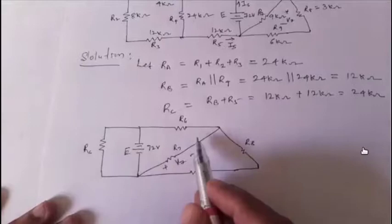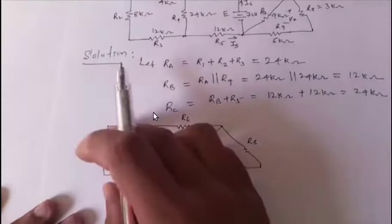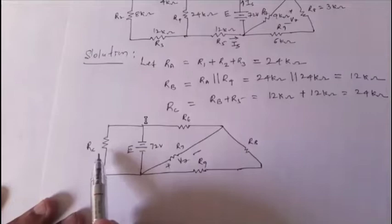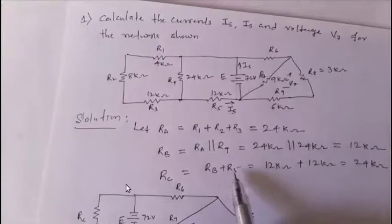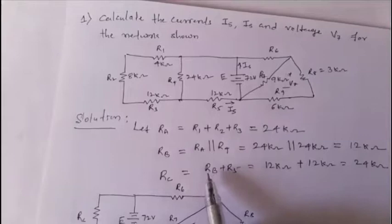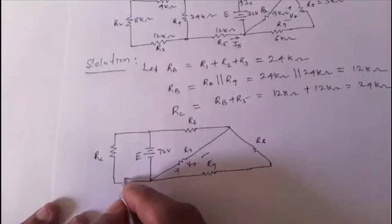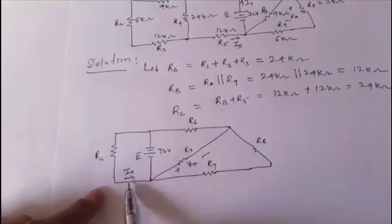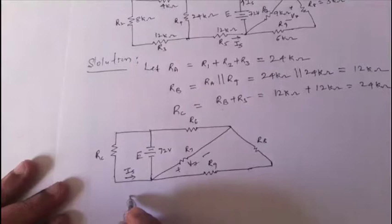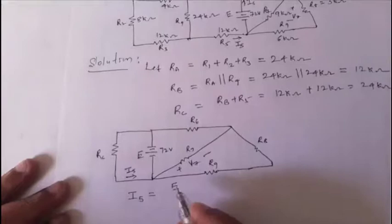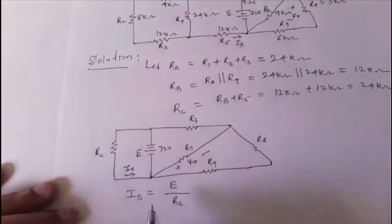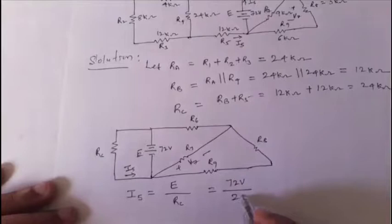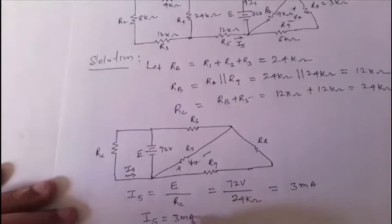In this reduced network, the voltage across rc equals e = 72 V because rc and e are in parallel. Since rc is the series combination of rb and r5, the same current flows through both — and that current is i5. Therefore, i5 = e / rc = 72 V / 24 kΩ = 3 mA.